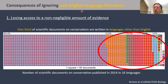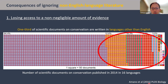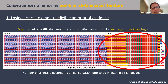In this paper published in 2016, we showed that about one third of scientific documents on biodiversity conservation is actually written in languages other than English, especially in Spanish, Portuguese, simplified Chinese, and French, and so on. So by ignoring non-English language literature we could be losing access to this amount of scientific evidence.